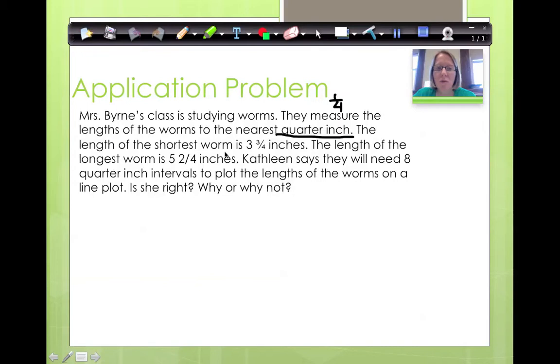The length of the shortest worm is 3 and 3/4 inches. The length of the longest worm is 5 and 2/4 inches. Kathleen says that they will need 8 quarter inch intervals to plot the lengths of the worms on a line plot. Is she right, or why or why not?